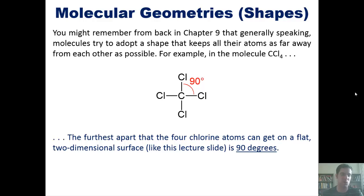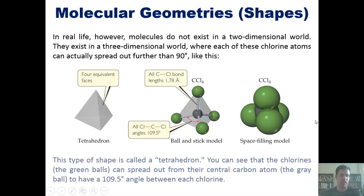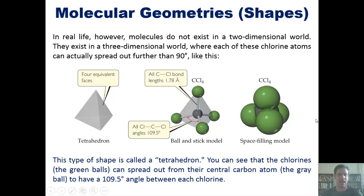In real life, however, these molecules don't exist in a two-dimensional world. They exist in a three-dimensional world. Hence, these chlorine atoms can actually spread out further apart than 90 degrees, as shown here. This shape, incidentally, is called a tetrahedron.